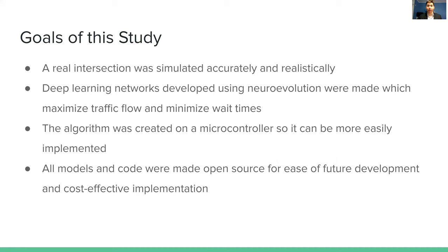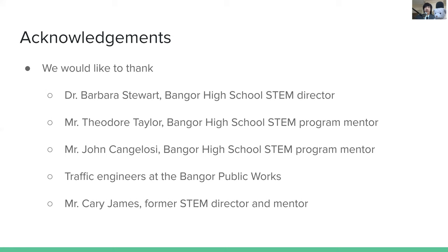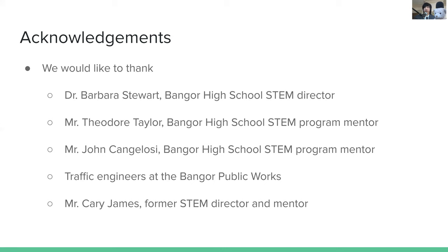To review the goals of our study: we did simulate a real intersection accurately and realistically; we optimized deep learning neural network agents that maximize traffic flow and minimize wait times compared to conventional algorithms; we created this on a Raspberry Pi for easy implementation; and all models and code are free and open source for ease of future development and cost-effective implementation. We would like to thank Dr. Barbara Stewart, Bangor High School STEM Director; Mr. Theodore Taylor; Mr. John Cangellosi from the Bangor High School STEM Program; all the traffic engineers at Bangor Public Works; and Mr. Kerry James, former STEM Director. We would like to entertain any questions at this point.